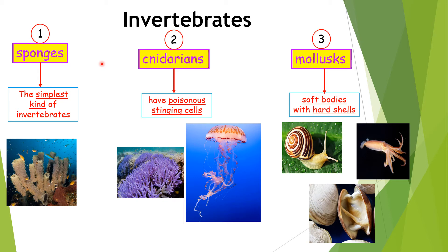Let's talk about a few characteristics of each kind of invertebrate. Sponges are the simplest kind of invertebrates. Cnidarians have poisonous stinging cells — for example, corals and jellyfish. Mollusks have soft bodies that are protected by hard shells — for example, the snail, the squid, and clams.